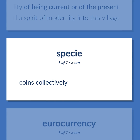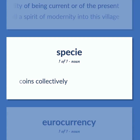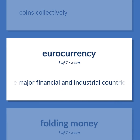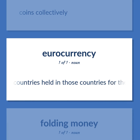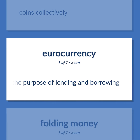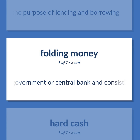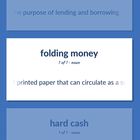Coins collectively. Currency of the major financial and industrial countries held in those countries for the purpose of lending and borrowing. Currency issued by a government or central bank and consisting of printed paper that can circulate as a substitute for specie.